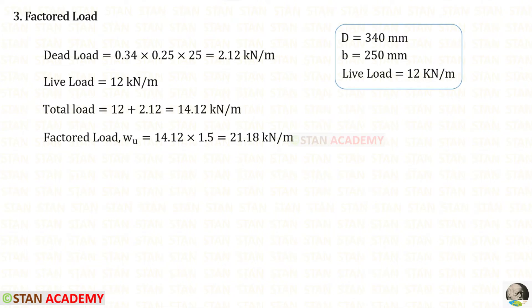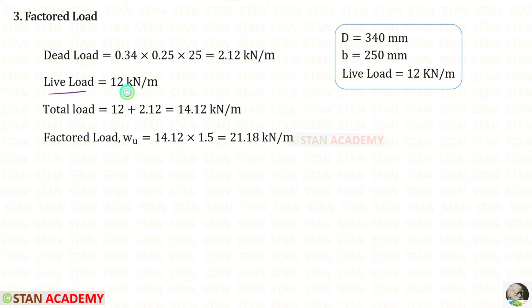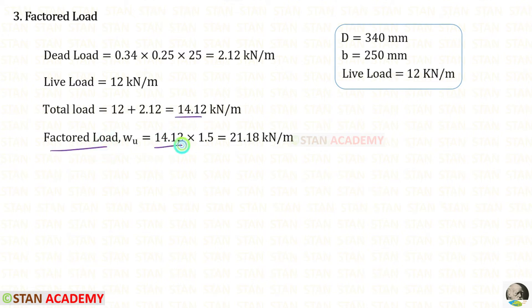Now we are going to find the factored load. First, we need to find the dead load. We multiply the unit weight of concrete, 25 kN per meter cube, with the cross-sectional area of the beam — 0.34 meter by 0.25 meter — giving a dead load of 2.12 kN per meter. The live load is given as 12 kN per meter. Adding these gives total load of 14.12 kN per meter. Multiplying by the load factor of 1.5, we get the factored load of 21.18 kN per meter.